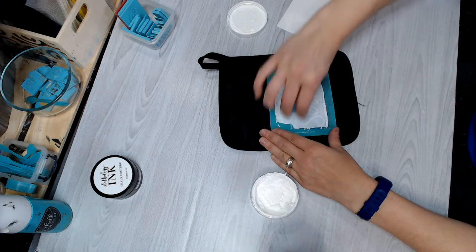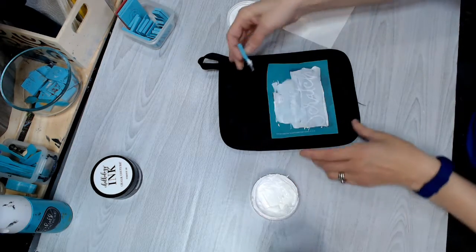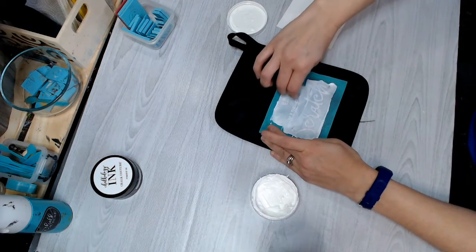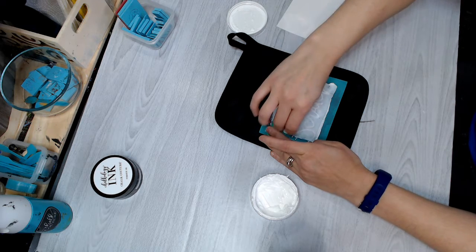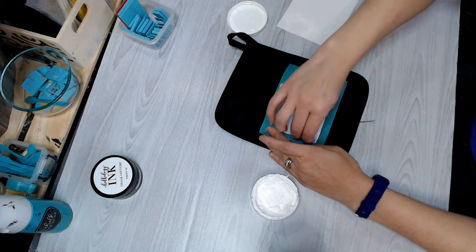There we go. Scrape the excess off and put it back in the jar. Make sure you have all your sections, and we're good to go. There it is. You can see it right through. It doesn't take much ink.